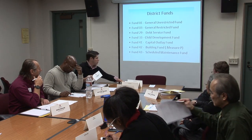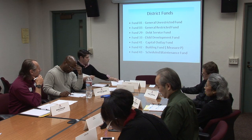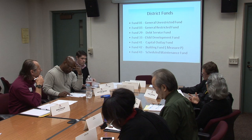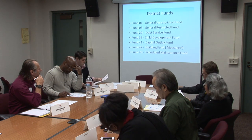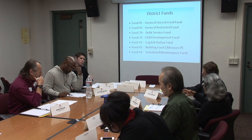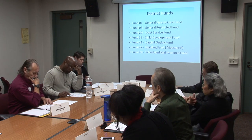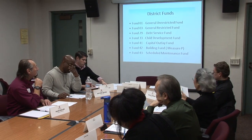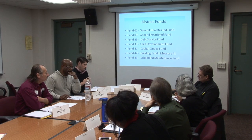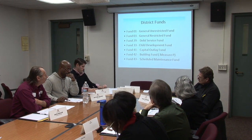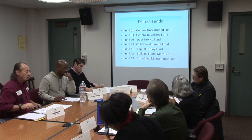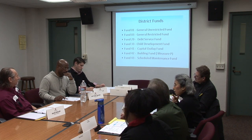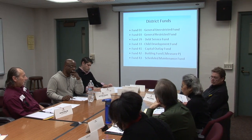Fund 1, the general unrestricted fund, is what we commonly use for our operational and educational needs. Fund 3, the general restricted funds, includes anything with very specific purposes — such as grants and categorical funding like SPS and EOP&S. Those are very specific to the program that we need to use them for. Even parking fees are very specific; we cannot just use them freely.